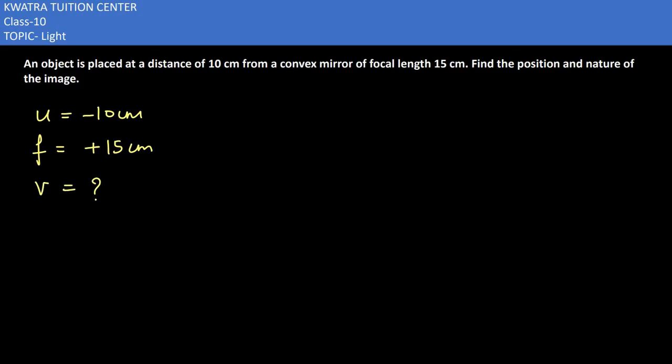We have to find out v with the help of mirror formula: 1/v plus 1/u is equal to 1/f. 1/v would be as it is. U value, it is minus 10. F, how much? Positive 15.